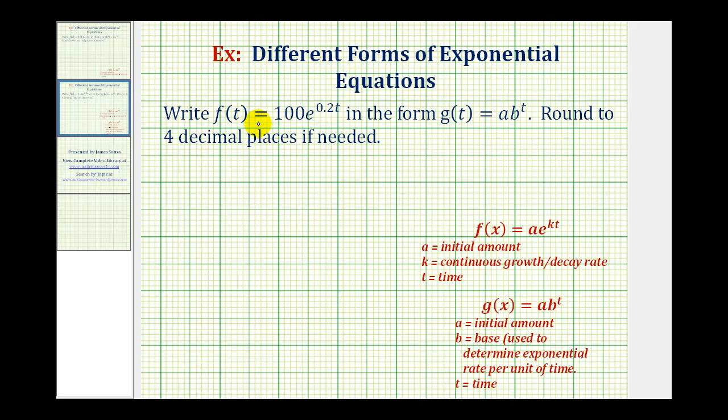We want to write the exponential function f of t equals 100 times e raised to the power of 0.2t in the form g of t equals a times b raised to the power of t.